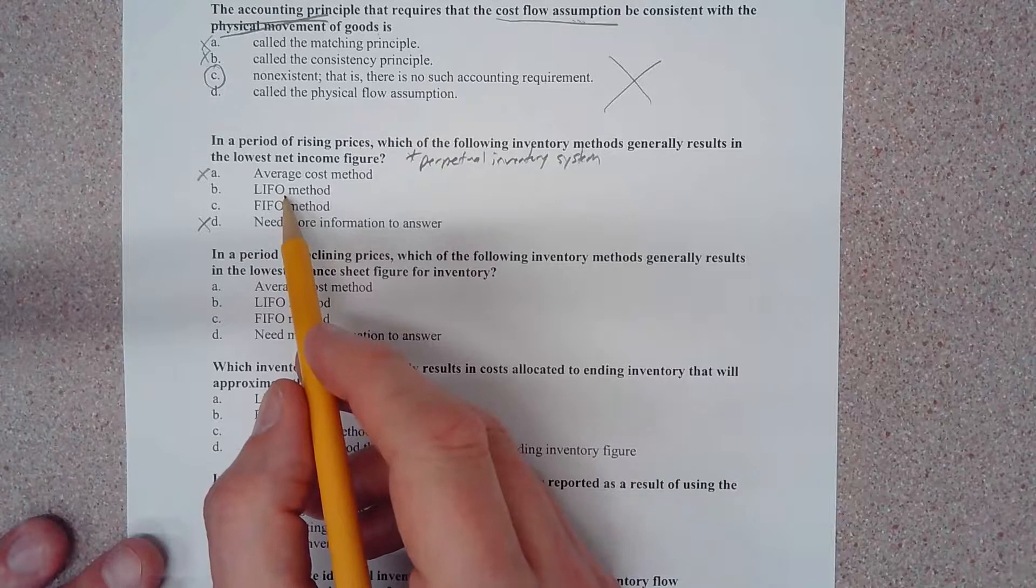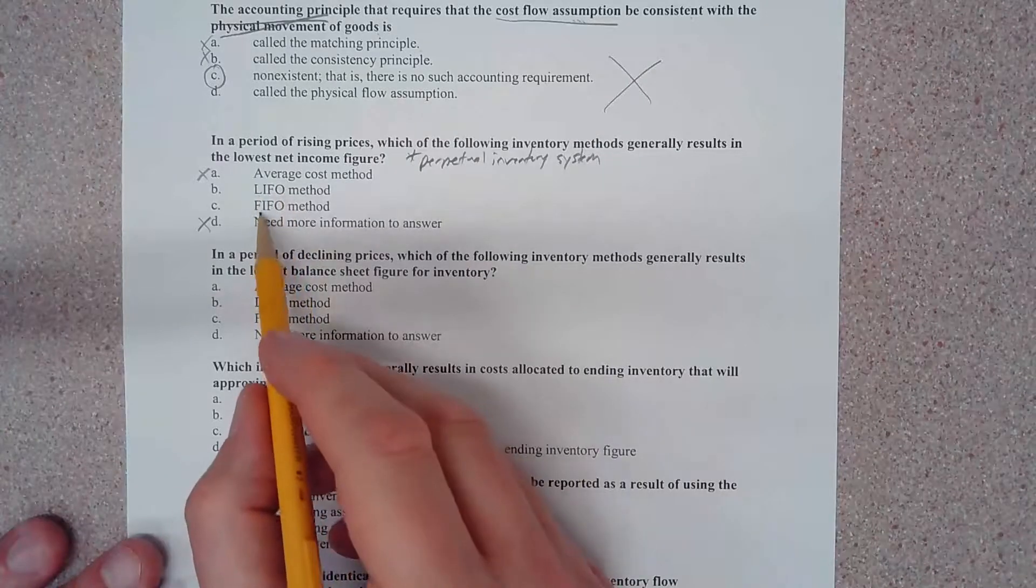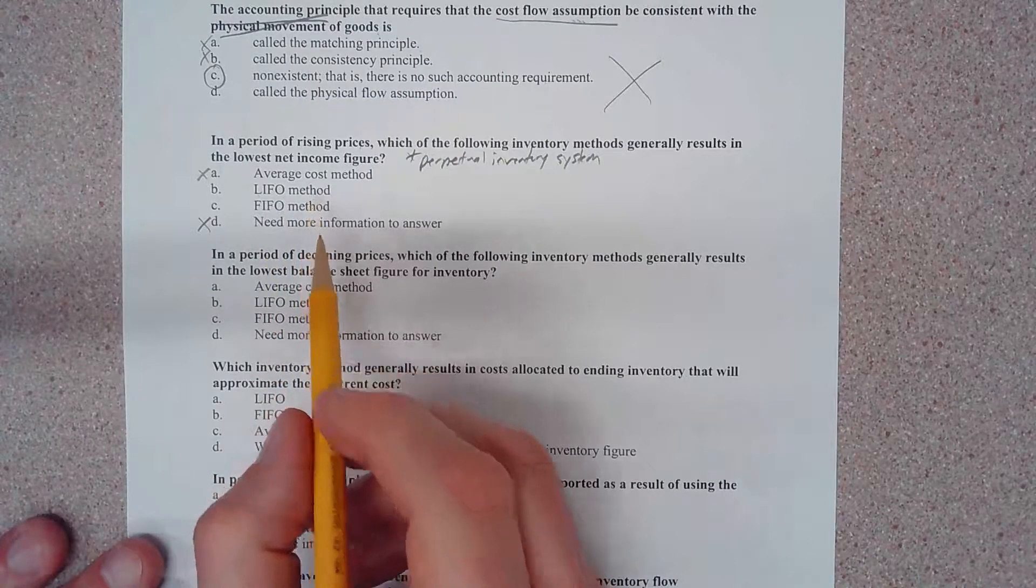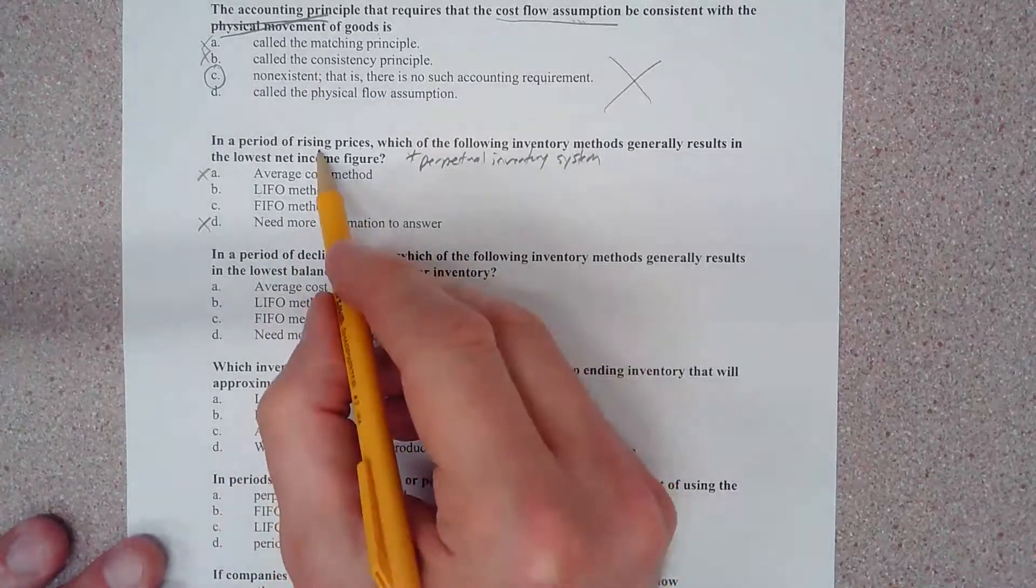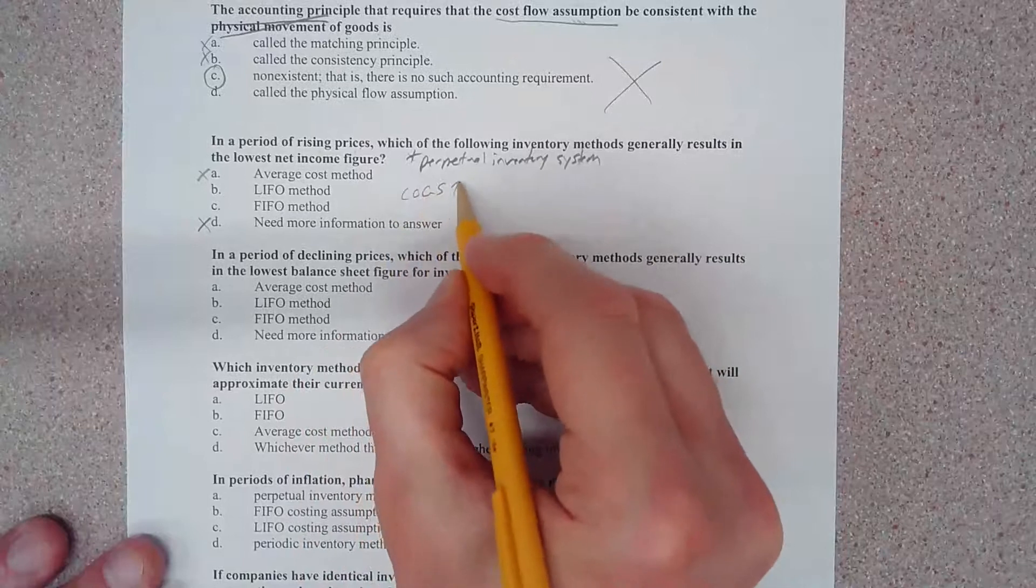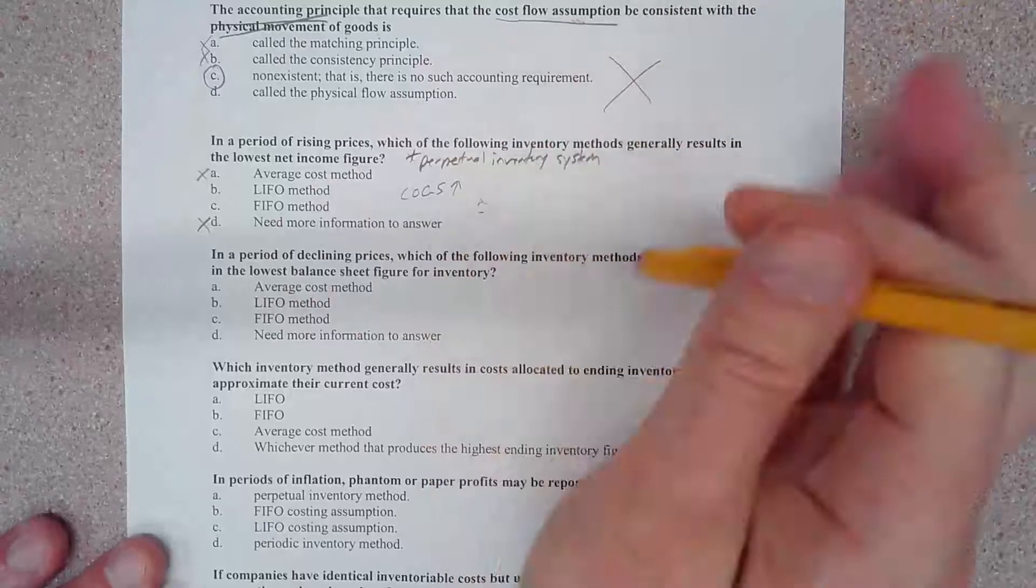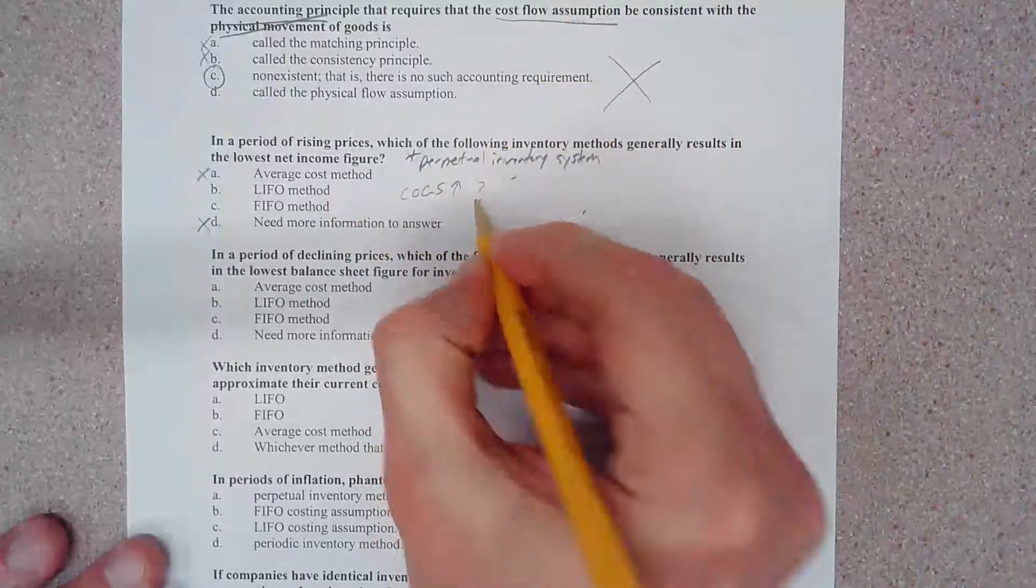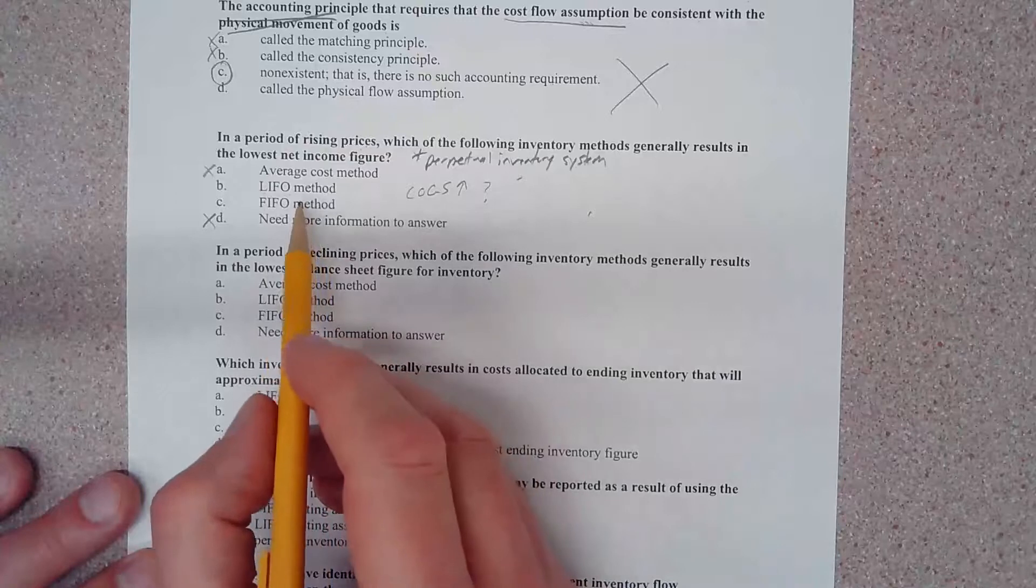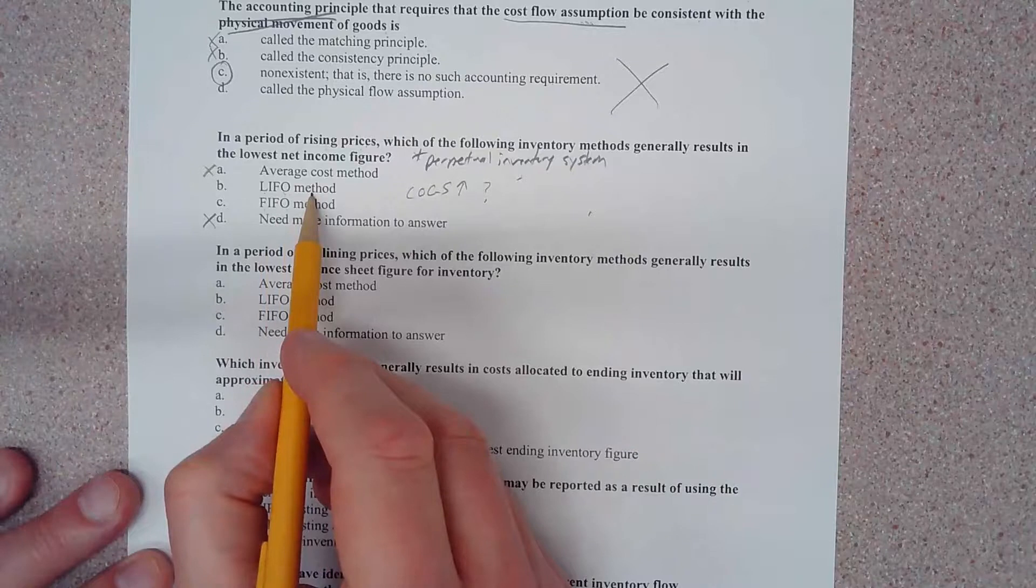Okay, so we now know that the answer is either B or C, and we have to understand conceptually what's going on here. LIFO stands for last in first out. FIFO stands for first in first out. So let's think about this. We have to determine, given this scenario of rising prices, cost of goods sold is going to be higher under which cost flow method?